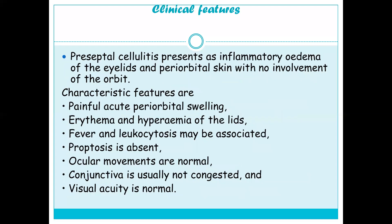Preseptal cellulitis presents as inflammatory edema of the eyelids and periorbital skin with no involvement of the orbit. Characteristic features include painful acute periorbital swelling, erythema and hyperemia of the lids, and fever and leukocytosis may be associated. Importantly, proptosis is absent, ocular movements are normal, the conjunctiva is usually not congested, and visual acuity is normal.